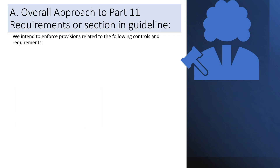Now we will discuss Section 1 — overall approach to Part 11 requirements. The guideline recommends enforcing provisions related to the following controls. First: limiting system access to authorized individuals. Only authorized persons should have access to the system — whether from the user department for analysis, QA reviewers reviewing electronic data, department heads approving electronic data, or IT personnel managing user management activities.